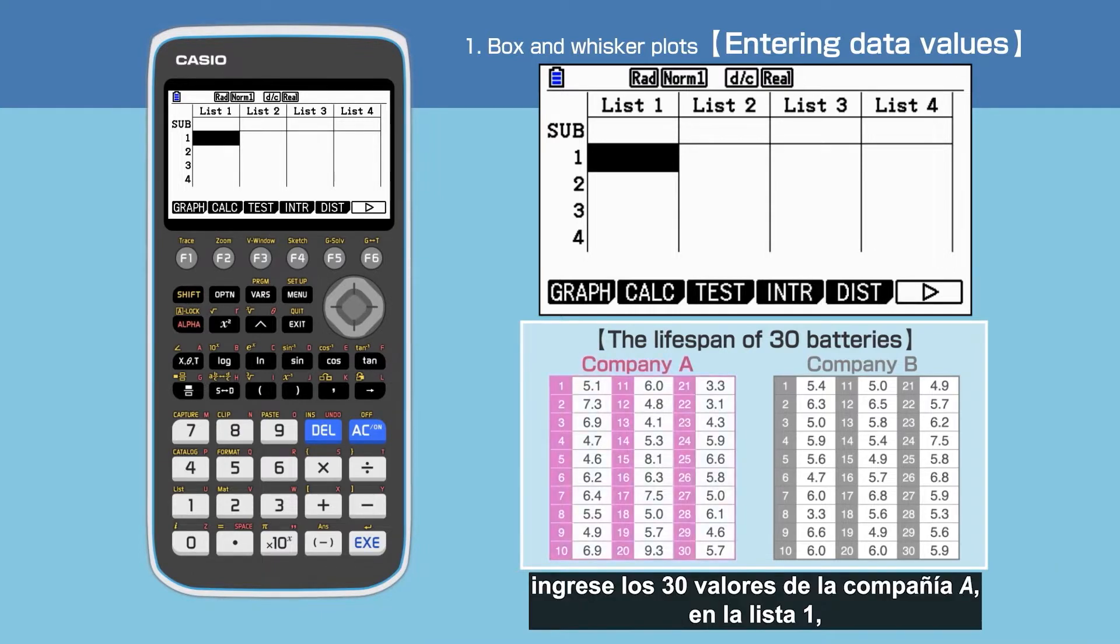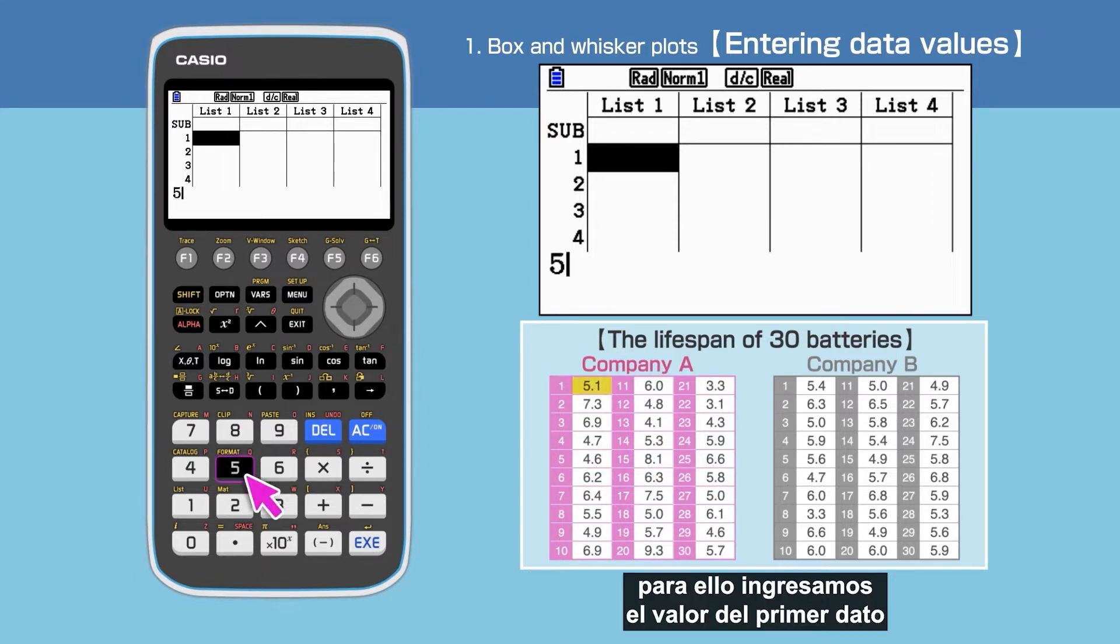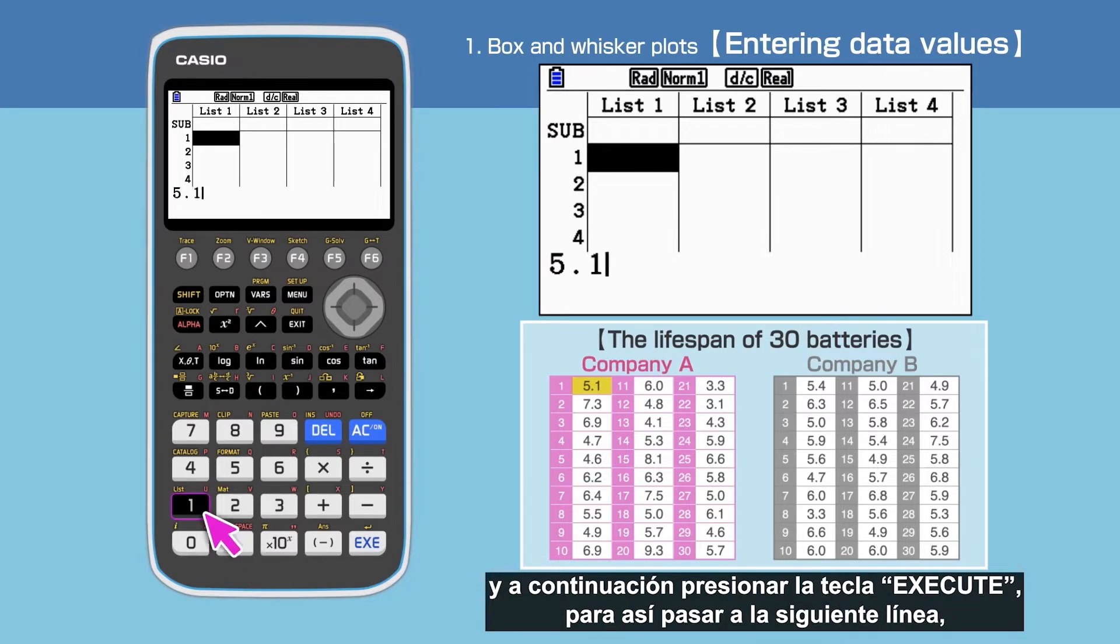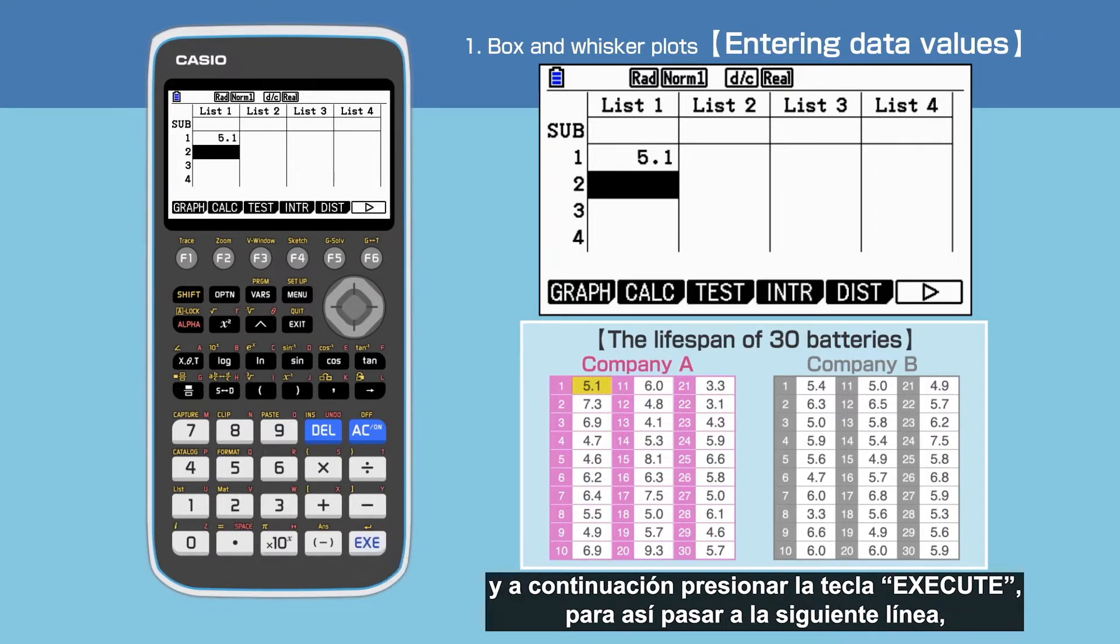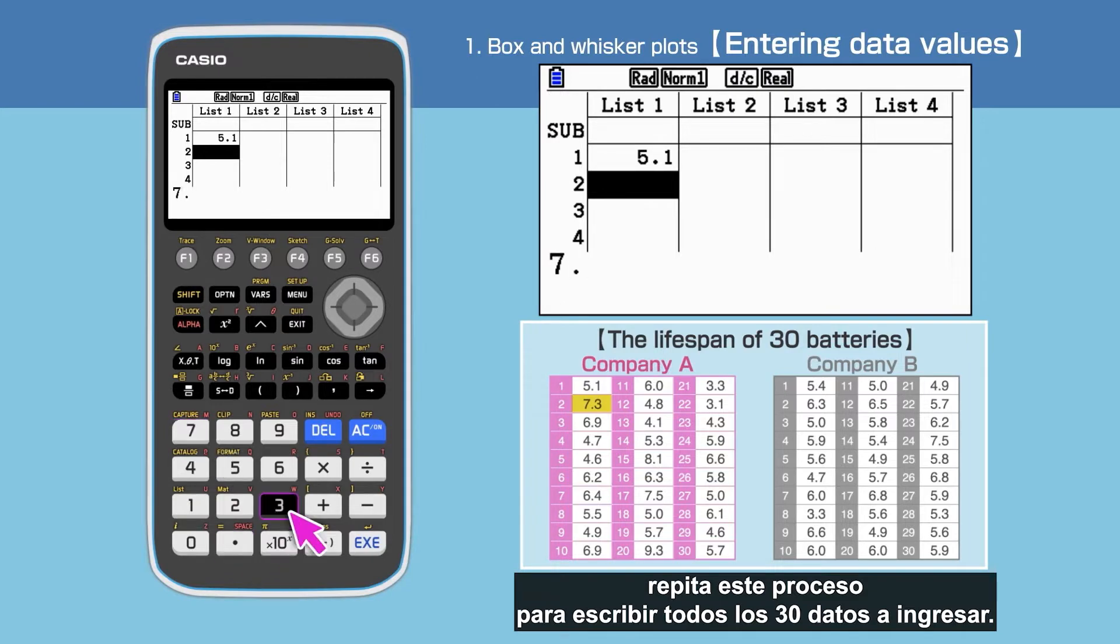Enter the 30 data values for company A in list 1. We need to enter the first data value and then press execute to proceed to the next line. Repeat this to input all 30 data values.